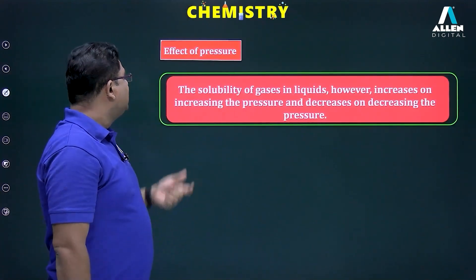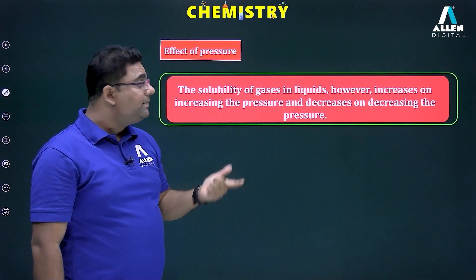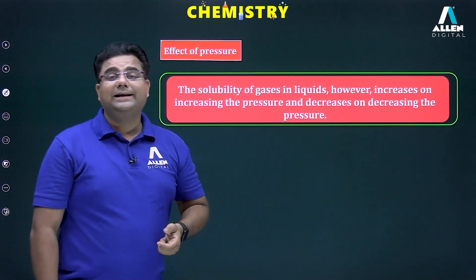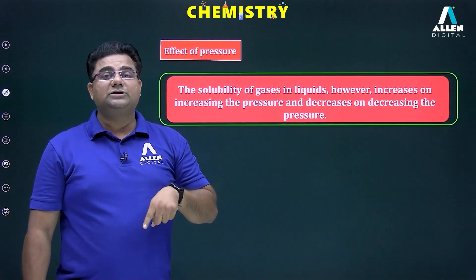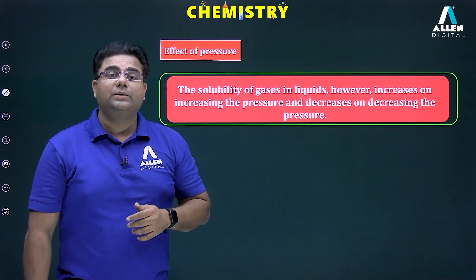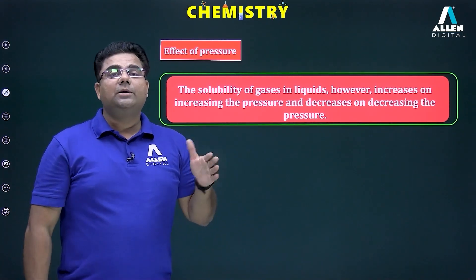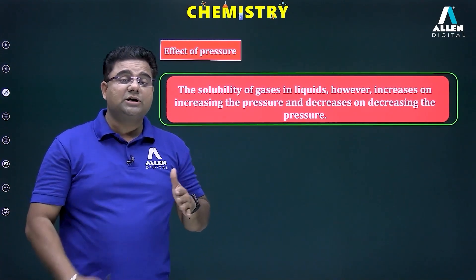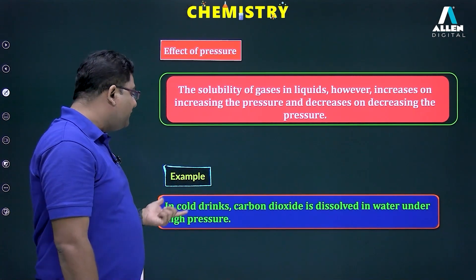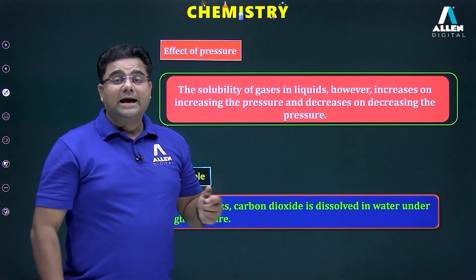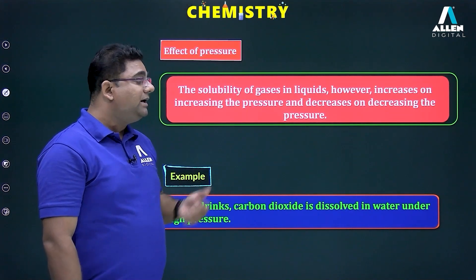The effect of pressure: the solubility of gases in liquid increases with increasing pressure and decreases with decreasing pressure — pressure is directly proportional to the solubility of gases in liquid. For example, in the manufacturing of cold drinks, carbon dioxide is dissolved in water under high pressure. This property is frequently used in the manufacturing of cold drinks.